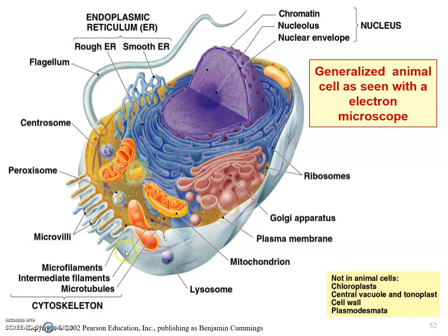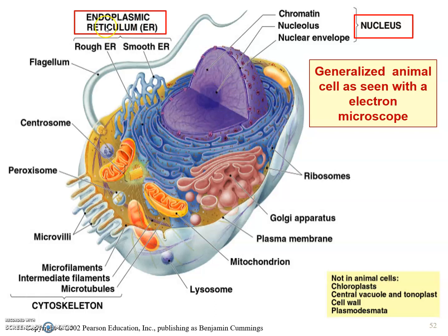From this diagram, you can see the animal cell, which contains various types of organelles. The organelles we are going to learn about are the nucleus, located in the center of the cell; the endoplasmic reticulum, which is divided into two types — rough and smooth endoplasmic reticulum; and the Golgi apparatus, also known as Golgi body.